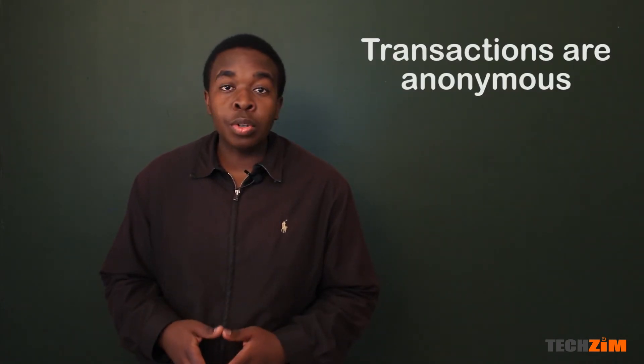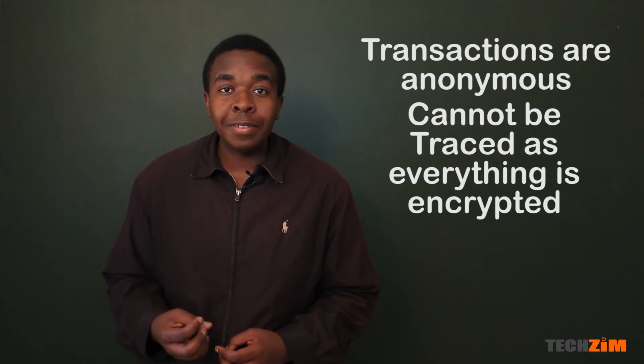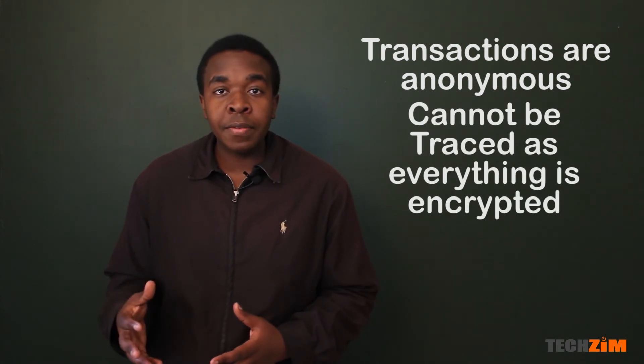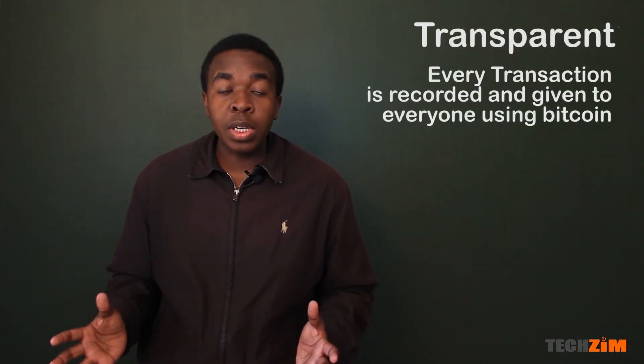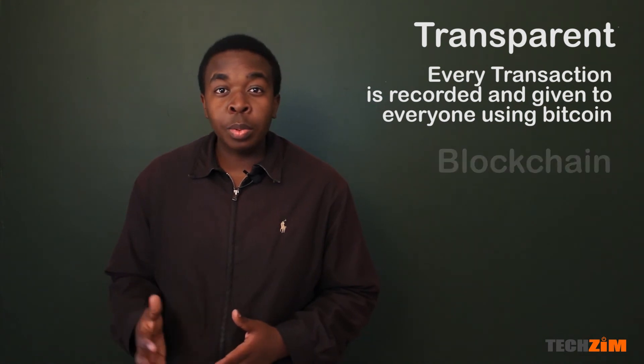When trading Bitcoin or transacting with Bitcoin, it is anonymous, so it cannot be traced back to you. So if you are the type of person who wants to be private and wants to move money, you can do that. It is transparent—all the transactions are visible to everyone through this thing that they call the blockchain, and we'll take a look at that as we continue on with our series.